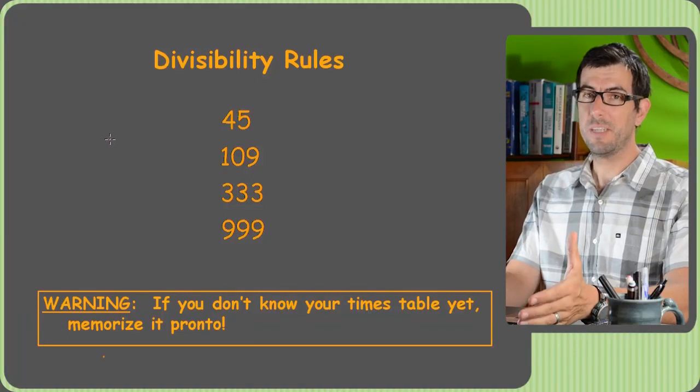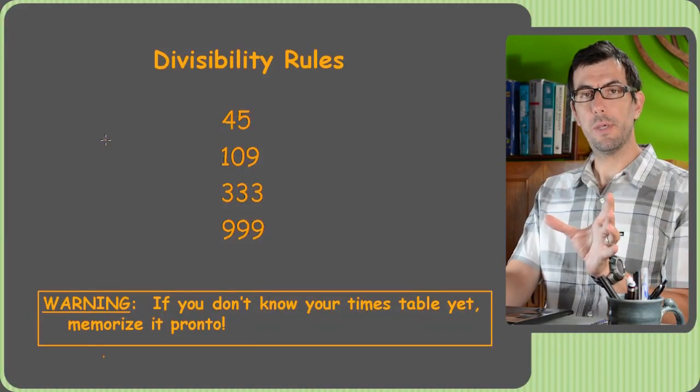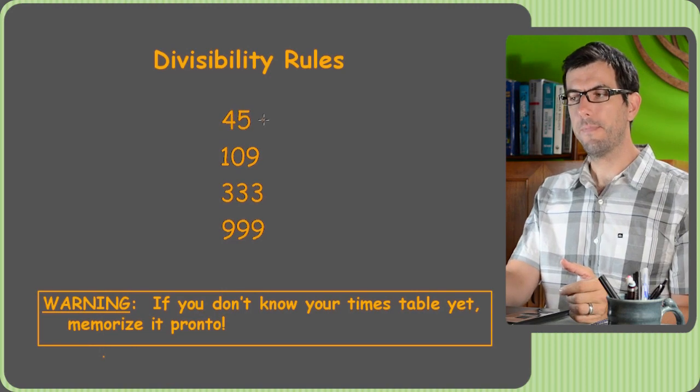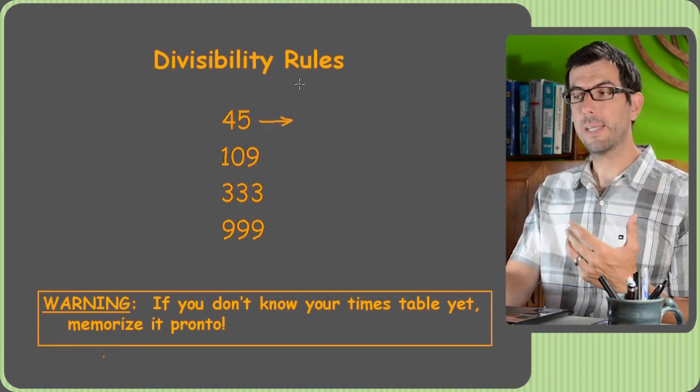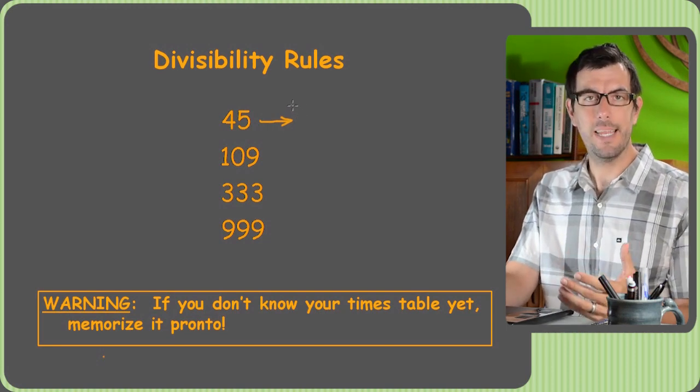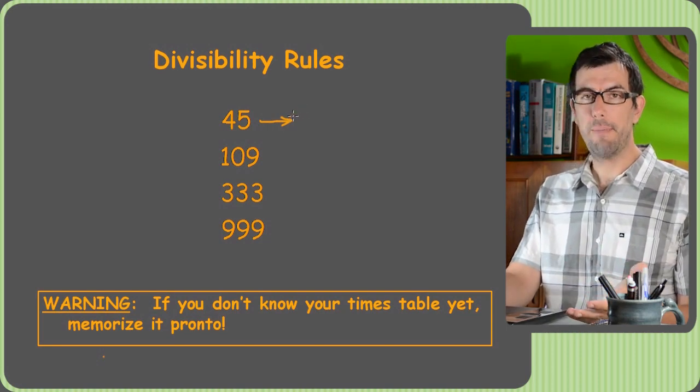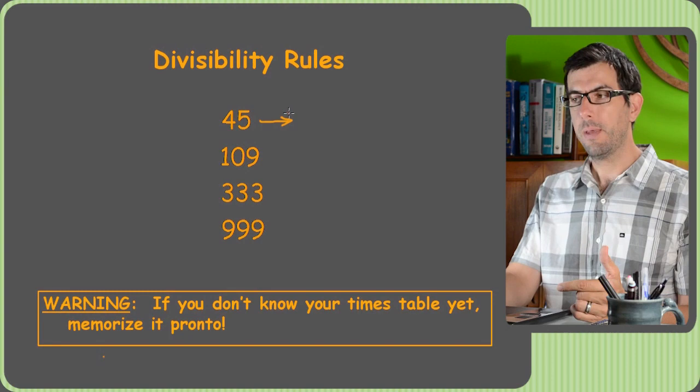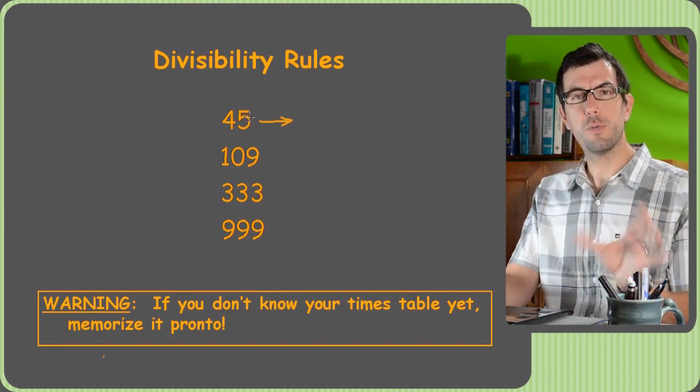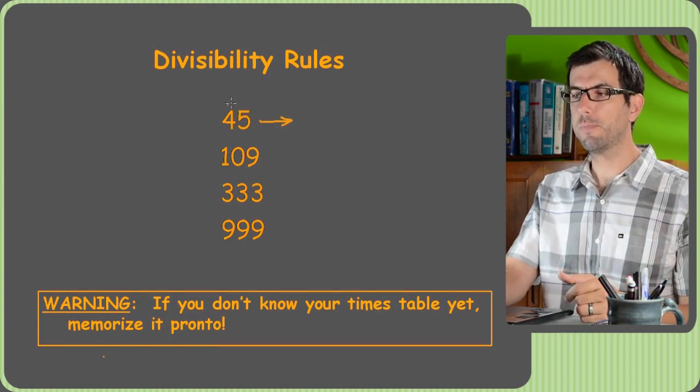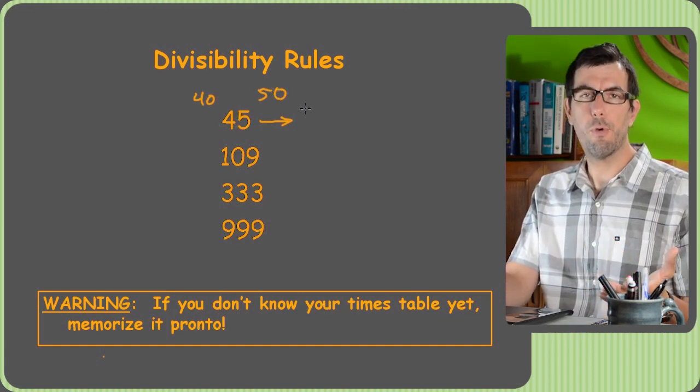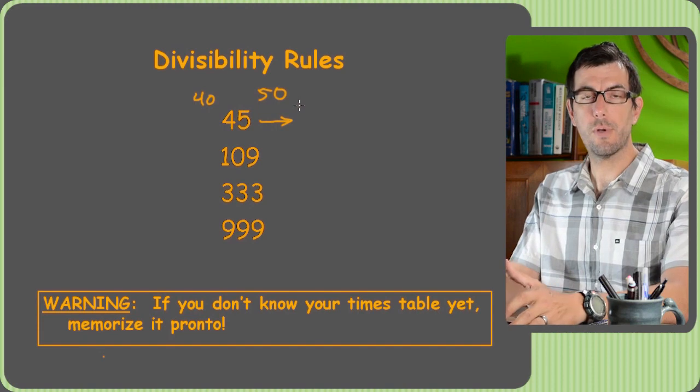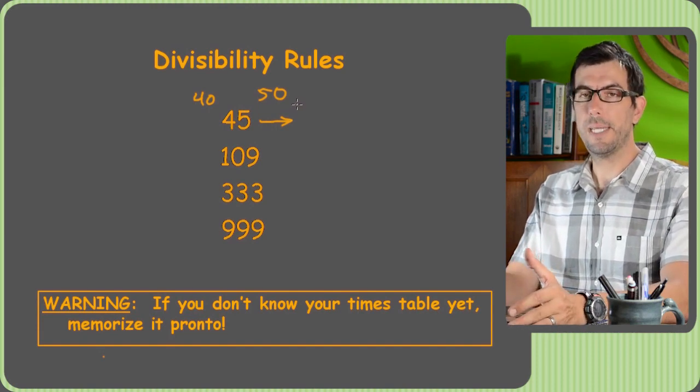Hi, welcome to our video about divisibility rules. When we say divisibility, we're talking about is a number divisible by another number? So someone might ask you, hey, is 45 divisible by 10? You'd be like, no way, because 40 is divisible by 10, but 45 falls in between a couple different multiples of 10. It falls between 40 and 50. So obviously if you took 45 divided by 10, you get 4.5 or something, that's a decimal, therefore it's not divisible by 10.